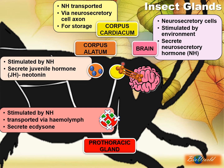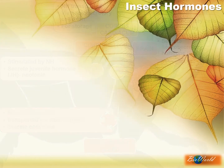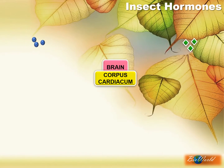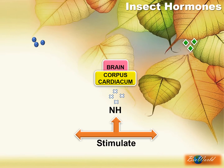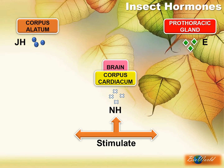Now you know the function of NH — that is to stimulate the corpus allatum and the prothoracic gland. Let's find out what is the function of JH and ecdysone. To refresh: the brain will secrete the hormone NH, which is stored in the corpus cardiacum. Then NH, when released from the corpus cardiacum, will go on to stimulate the corpus allatum to secrete JH and the prothoracic gland to secrete ecdysone.